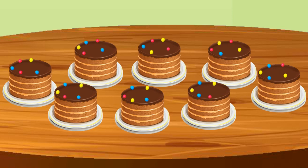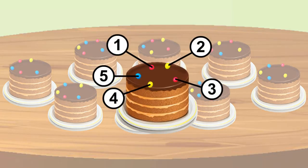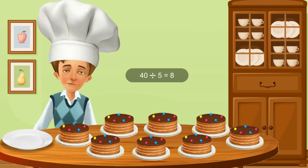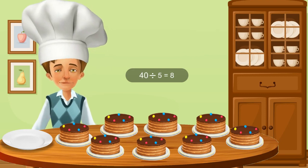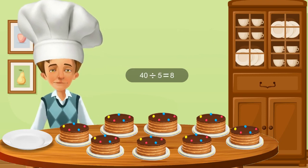No jams are left. Therefore, there are 5 jams on each cake. Hence, I can say that 40 divided by 8 is equal to 5.